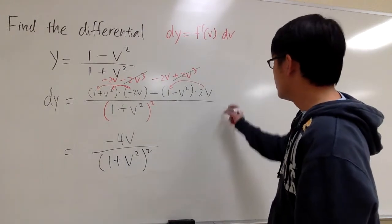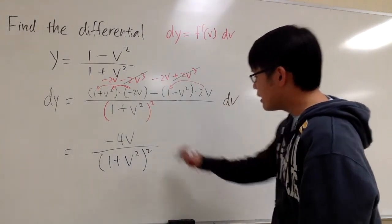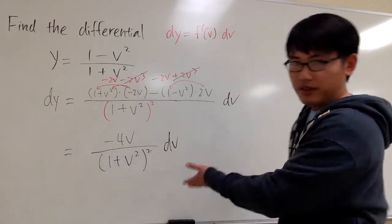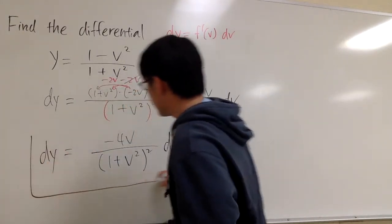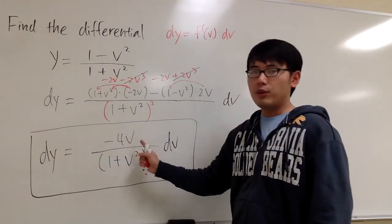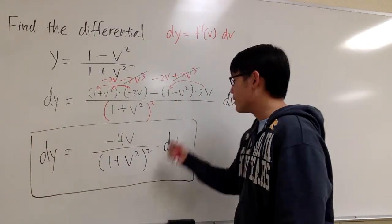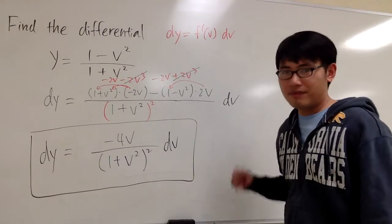But since this is differential, so technically I should put dv on the side and then at the end, dv on the side. This is the differential of y, which is just the derivative of the function multiplied by dv. That's it.